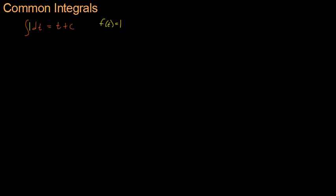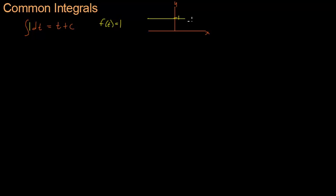To understand a little bit better how this integral works and why it returns t plus a constant, I'm going to draw a picture. This is a graph. Here's the x-axis, here's the y-axis. And if the function we're integrating is 1, then saying that here's 1 on the y-axis, our function might look like this. This is f of t.